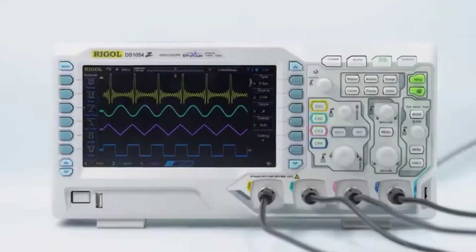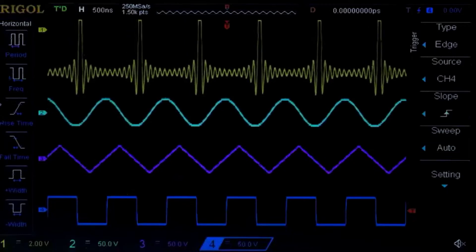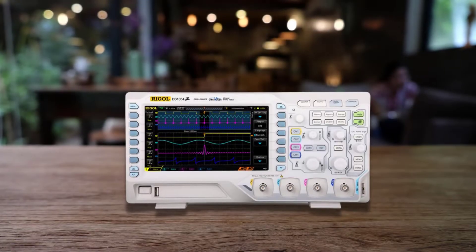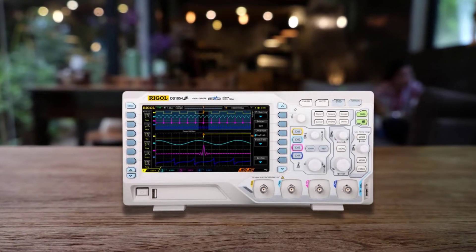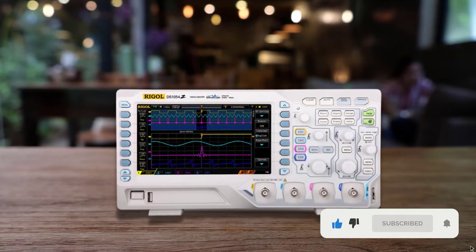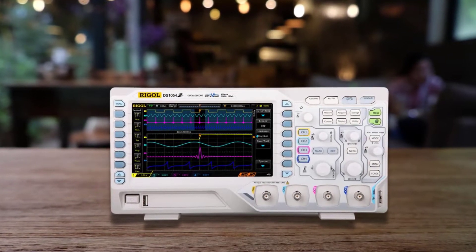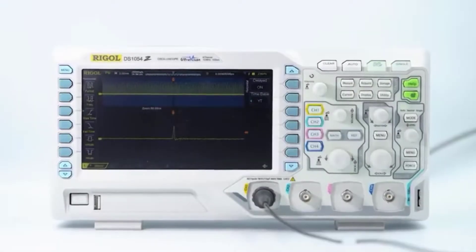It has a sample rate of 1 GSa/s and relatively huge memory depth of 12 MPTS, which is upgradable to 24 MPTS. The case is made out of heavy-duty, scratch-resistant plastic, and all buttons and connections are quite solid. The overall build quality of this oscilloscope is as good as that of an expensive top brand.